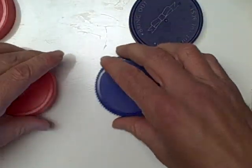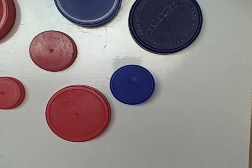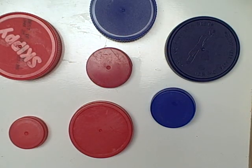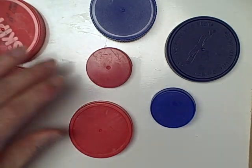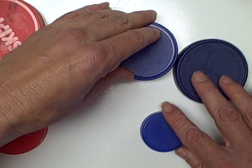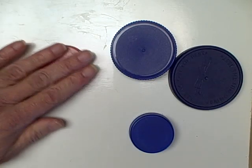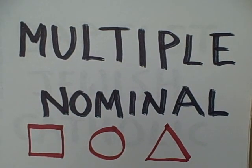Here's an example of nominal scaling that is binary. Here we see a total of seven cases of plastic tops. We can classify them into a red category, of which we have four cases, and a blue category, in which we have three cases. Red and blue — that's pretty easy. So that was binary nominal scaling.